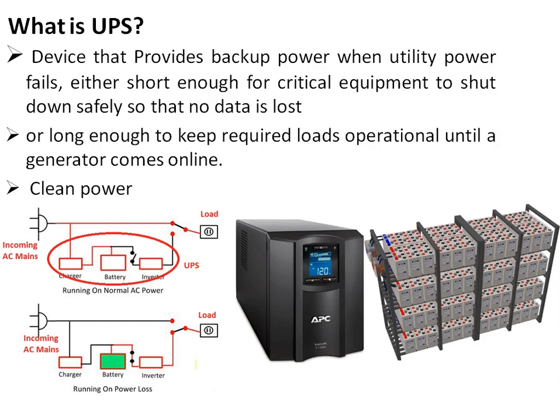As seen in the left side figure, under normal conditions the incoming mains is directly fed to the load. This is a standby type of UPS, which is commonly used in household applications. The power is directly fed to the load and simultaneously, while power is available, the charger will charge the battery. Whenever a power outage occurs, the UPS detects it, the changeover switch is changed, and the inverter supplies power to the load.